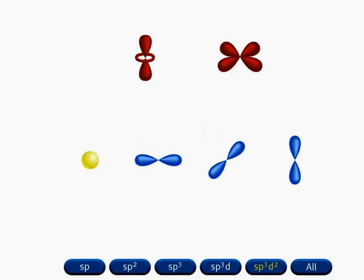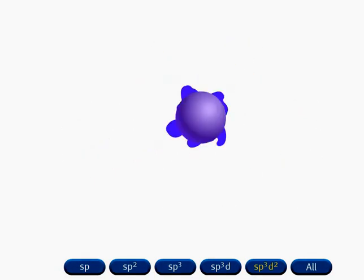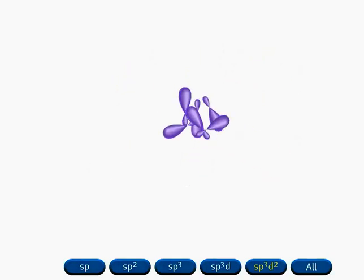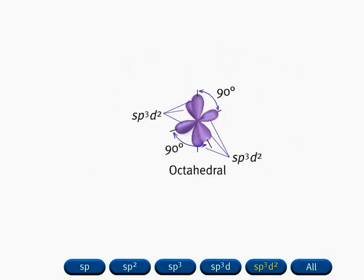Mixing an s orbital, three p orbitals, and two d orbitals generates six equivalent sp³d² hybrid orbitals. Note that the number of sp³d² hybrid orbitals produced is equal to the number of atomic orbitals that are hybridized. The angles between the orbitals are 90 degrees.